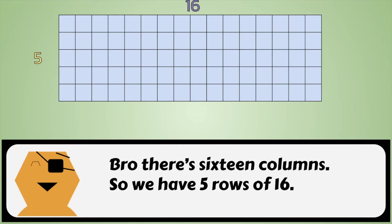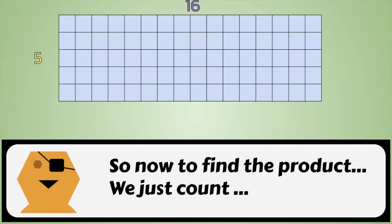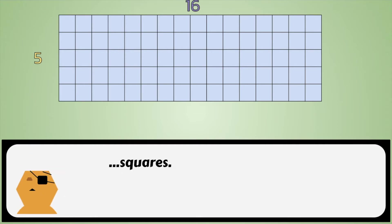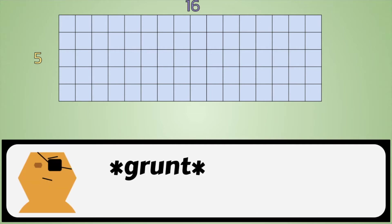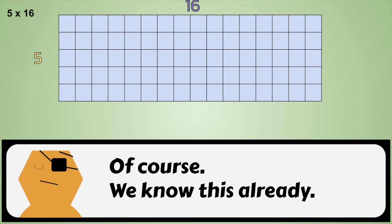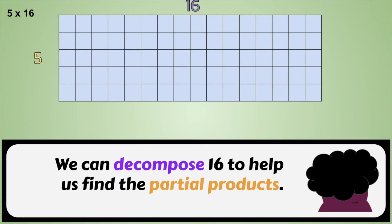So we have five rows of sixteen. That's five times sixteen. Nice. So now, to find the product, we just count all of the squares. Yes, but no. We have five rows of the number sixteen, so we're solving five times sixteen. We can decompose sixteen to help us find the partial products.